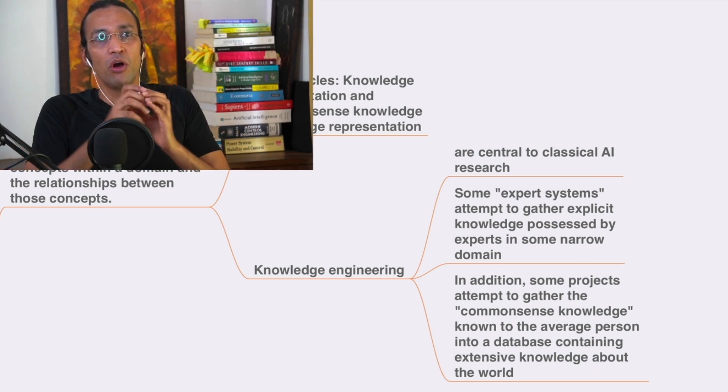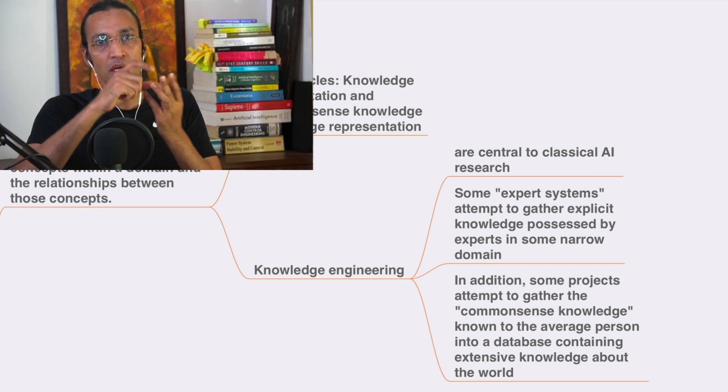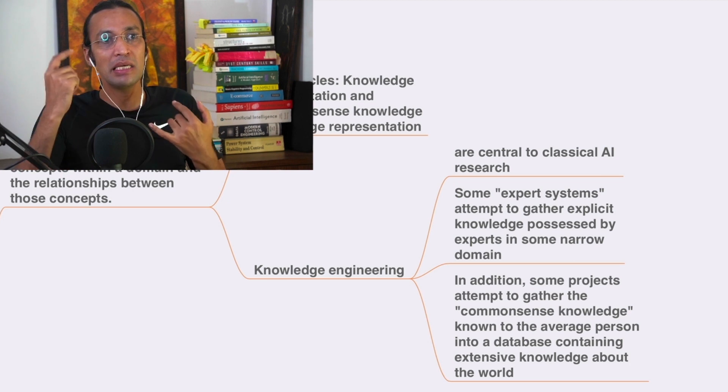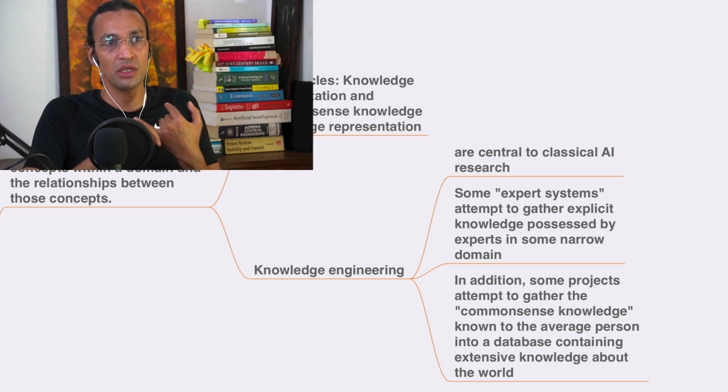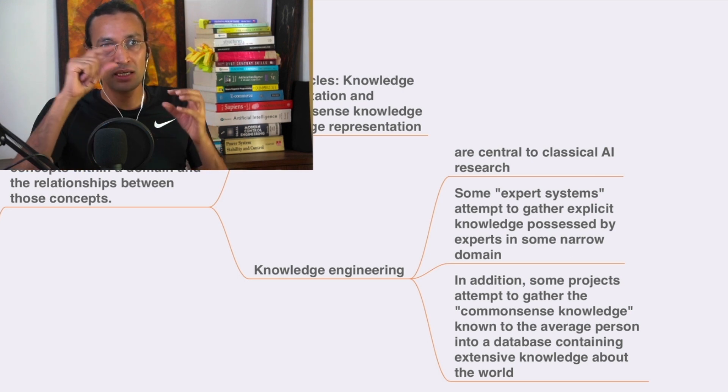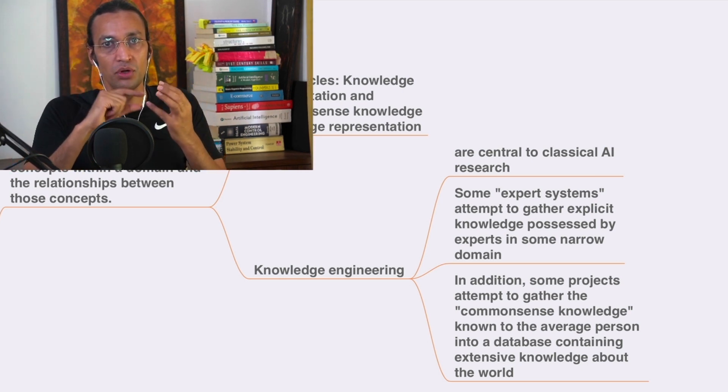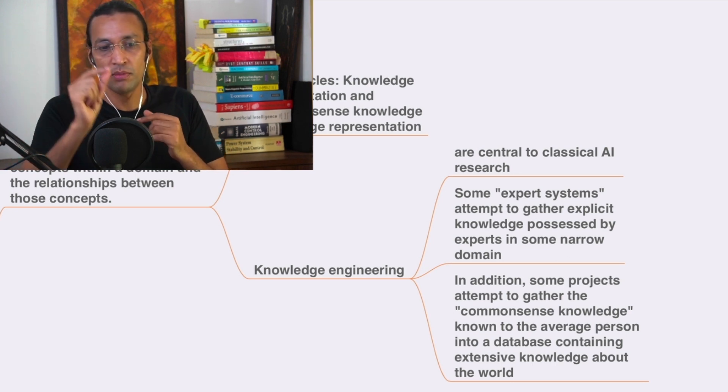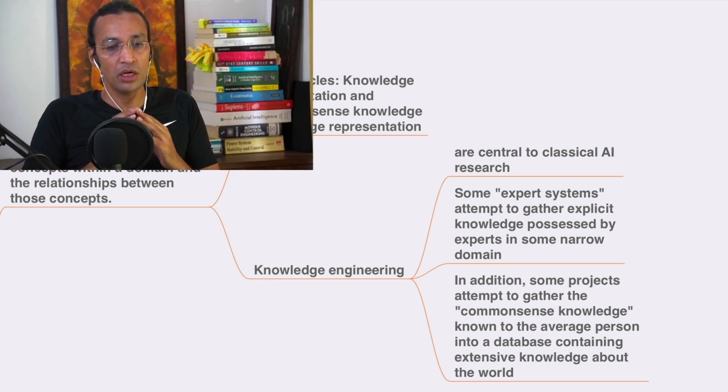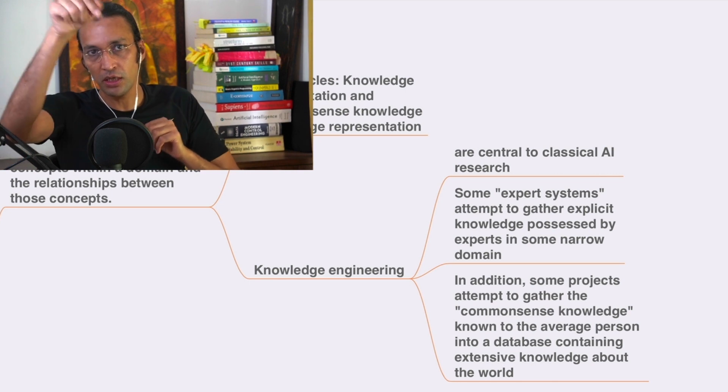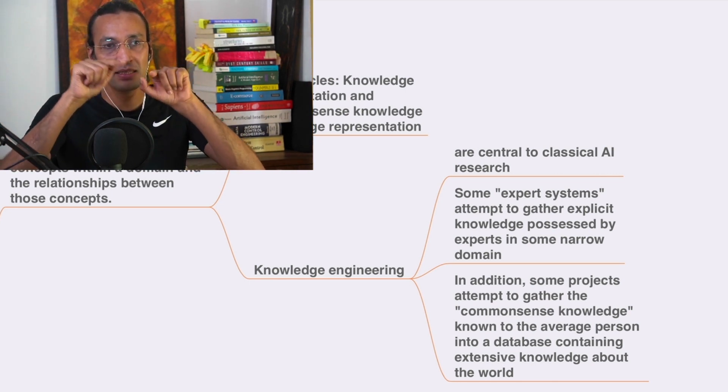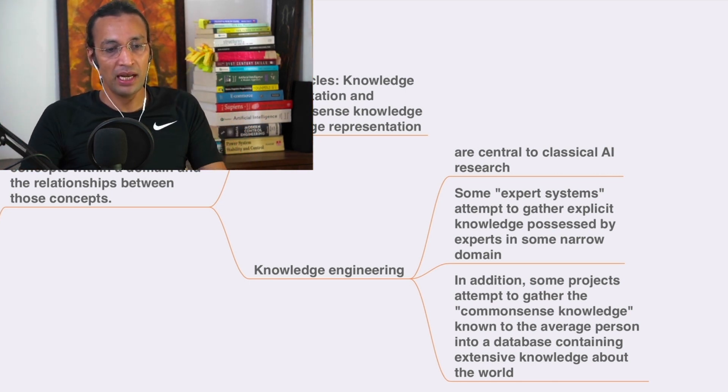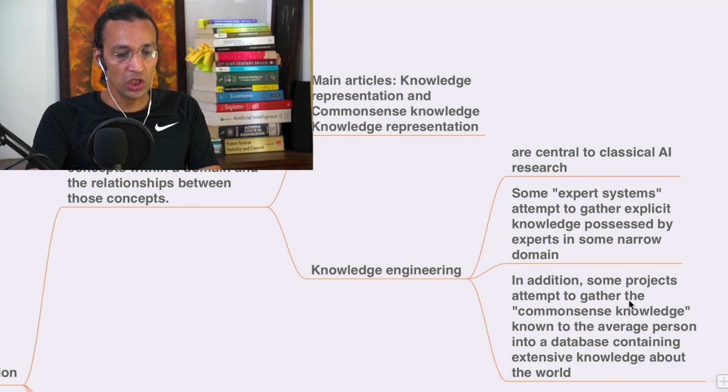Spam emails is an example where machine learning and AI is used. A lot of spam emails come to your email inbox, so that is a specific problem. Expert systems are experts in one specific area, and this is how they started realizing that we need to go deeper.